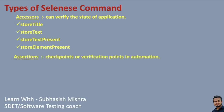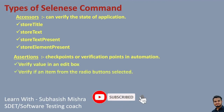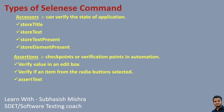Then we will see what assertions are. Assertions are used like checkpoints or verification points in automation. Using assertions, we can verify if expected results and actual results are matching or not. Assertions are used in three modes: assert, verify, and waitFor. Examples include verifying a value in an edit box, verifying if a radio button item is selected, asserting a text, verifying a text, and verifying a title.